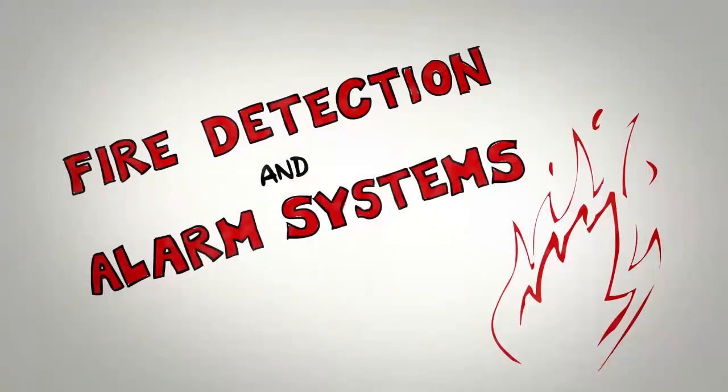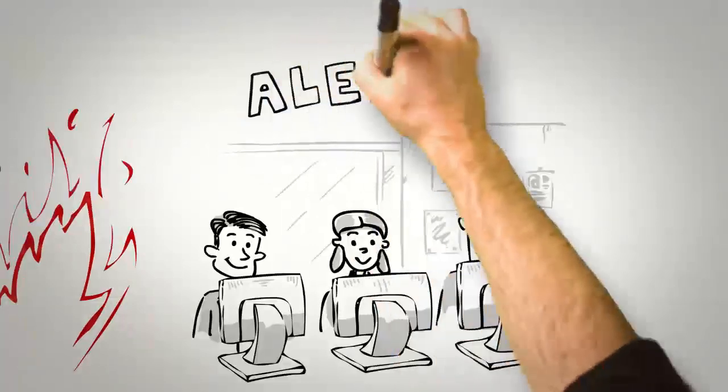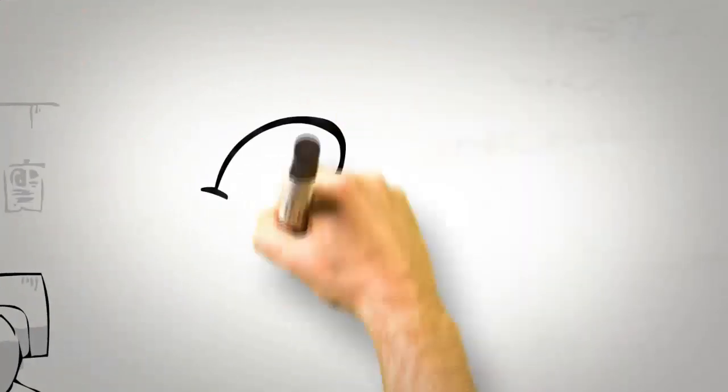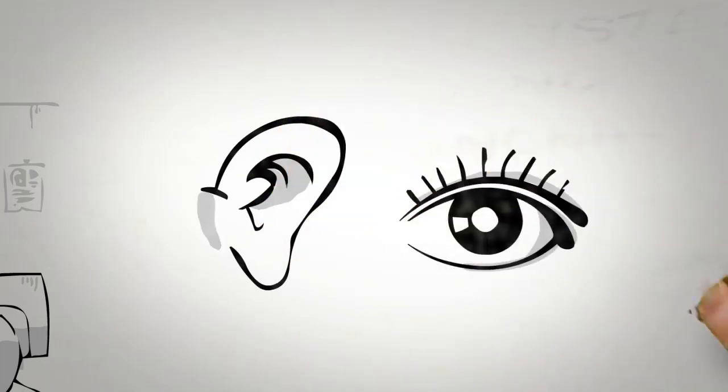Fire detection and alarm systems have one primary function, to alert everyone in the building of a fire. Today, it's common to use a mix of audible and visual alarms to efficiently warn people of an emergency.